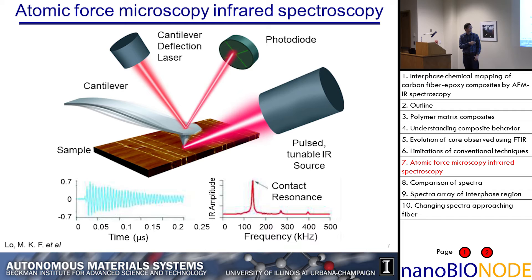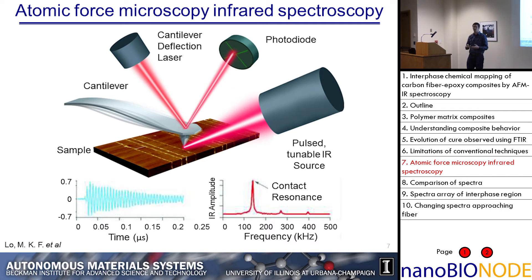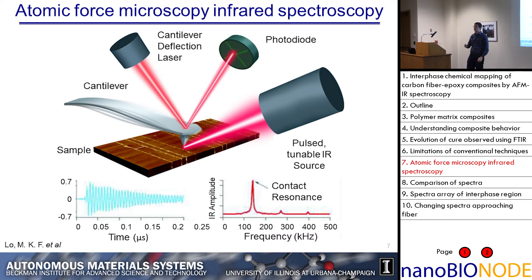There are two kinds of measurements this technique can do. First, you can maintain a constant wave number and follow your AFM probe as you raster across the surface, which gives you a chemical map showing the response to that specific wave number in a region of your sample. Alternatively, you can keep the AFM probe in the same location and modulate the IR source to generate an IR spectrum using this technique.